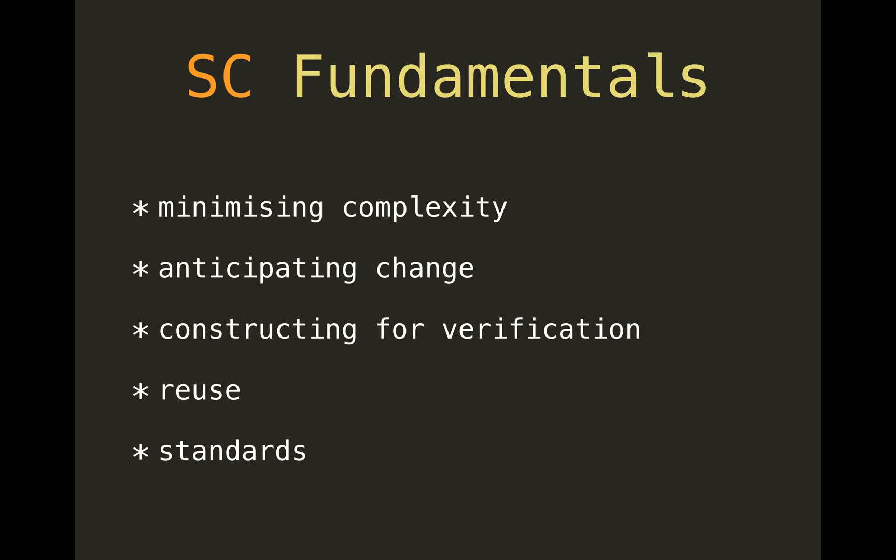The fundamentals of software construction include five things. First is minimizing complexity — always going for the simplest solution, both on a small level and a big level. Second is always anticipating changes, thinking about what will happen if you need to change some aspects of what you're programming.